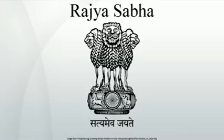The Rajya Sabha has equal powers with the Lok Sabha in initiating and passing a motion for the impeachment of the President, by two-thirds of the membership of the House. It also has equal powers in initiating and passing a motion for the impeachment of the judges of the Supreme Court and the state high courts, by a majority of the membership and at least two-thirds majority of members present and voting. Equal powers also apply in initiating and passing a resolution declaring war or national emergency by two-thirds majority, or constitutional emergency by simple majority, in a state.